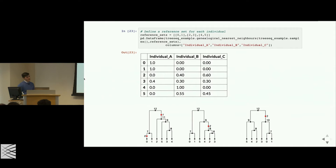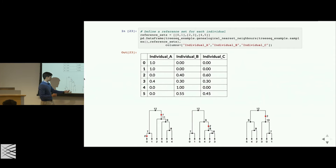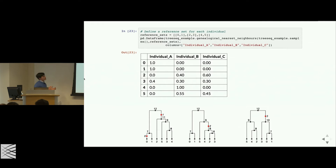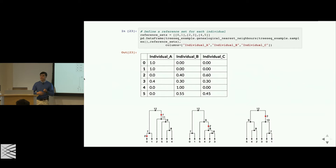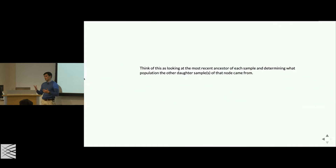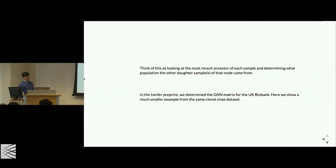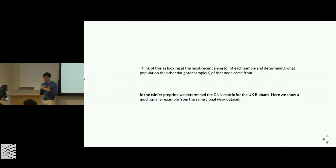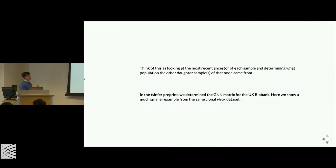Intuitively, genealogical nearest neighbors tells you: what's the most recent common ancestor and what are the other daughter nodes — the sister or sibling nodes of every node. In the preprint, we did this for the UK Biobank and found really fine-scale population structure in the UK down to county and sub-county level. For the vivax example, we run GNN in seven milliseconds on the 15 populations as reference sets. We subset reference sets because some only have one sample, ending up with about six reference sets.